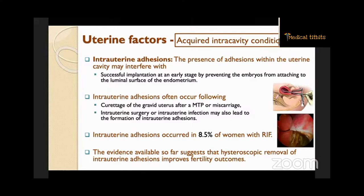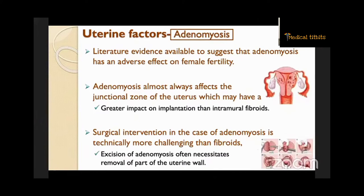Another important factor is adenomyosis. Literature evidence suggests that adenomyosis has an adverse effect on female fertility. Adenomyosis almost always affects the junctional zone of the uterus, which may have a greater impact on implantation than intramural fibroids. Surgical intervention for adenomyosis is technically more challenging than for fibroids, as excision often requires removal of part of the uterine wall.